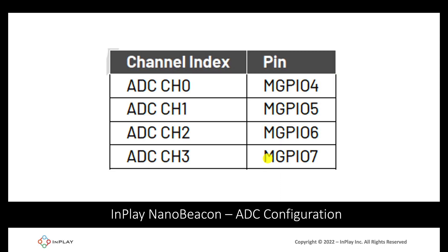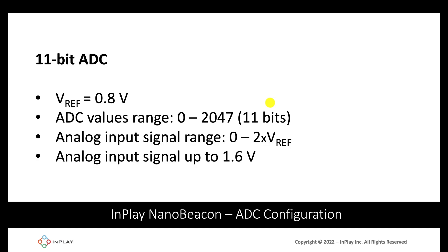The IN100 has four analog input channels available: channel zero, channel one, channel two, and channel three. They correspond to the following mixed signal pins or GPIOs: four, five, six, and seven. It contains an 11-bit ADC with a reference voltage of 0.8 volts.